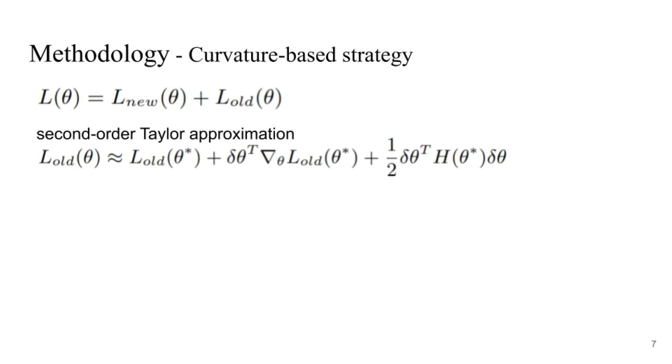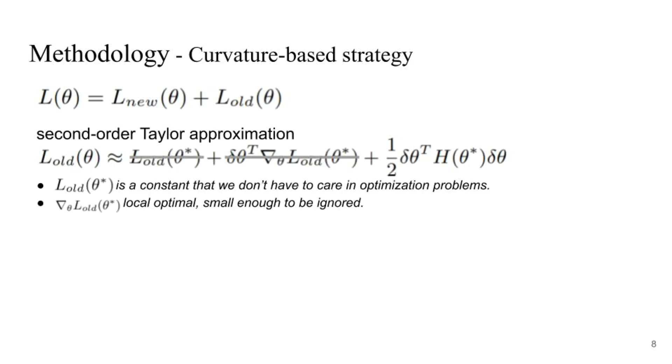We approximate L_old by using the second-order Taylor expansion at theta equals theta star. Note that L_old at theta star is a constant. We assume that the SE model has reached a local minimum, so that the elements in the gradient vector of L_old at theta star are generally small enough to be ignored. Therefore, we can take the approximation of L_old as a quadratic form.